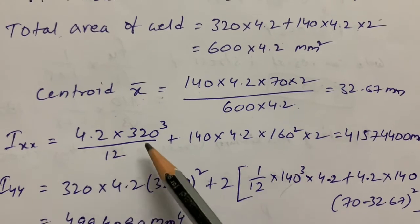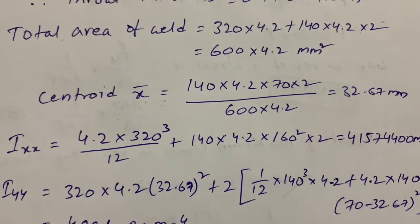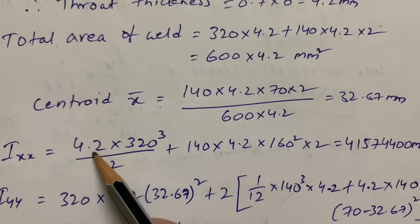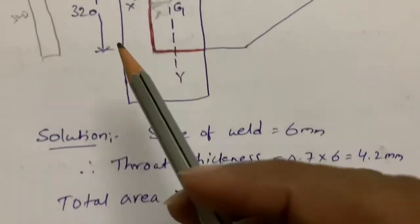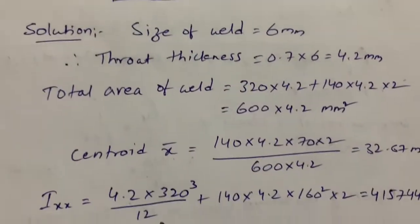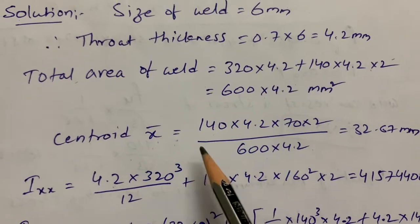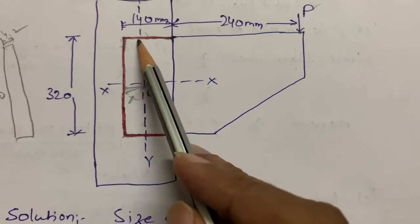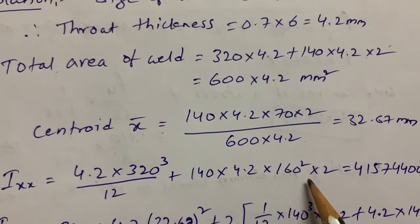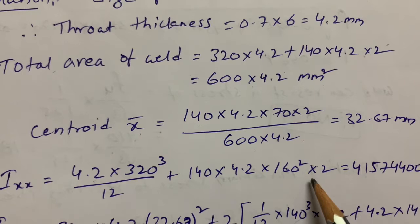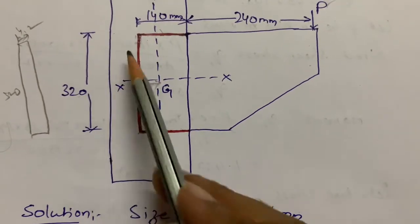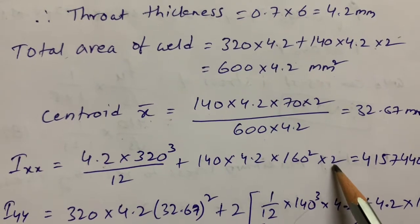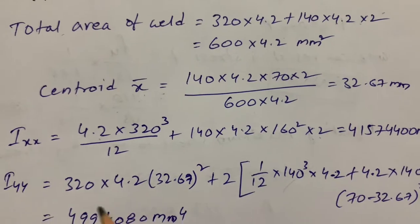Next we calculate the moment of inertia using the formula bd³/12 + A·yc². For Ixx, we apply the parallel axis theorem. The throat thickness b = 4.2 mm and depth d = 320 mm. So Ixx = 4.2 × 320³/12 + 140 × 4.2 × 160² × 2. Here 160 is half of 320, and we multiply by 2 for both sides of welding.